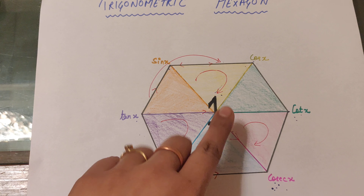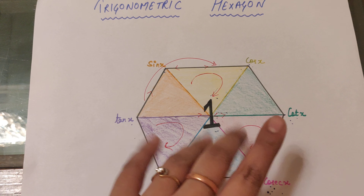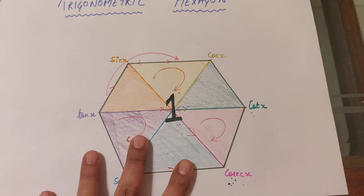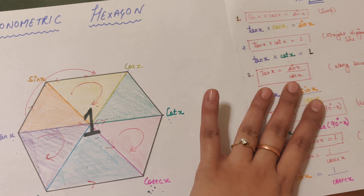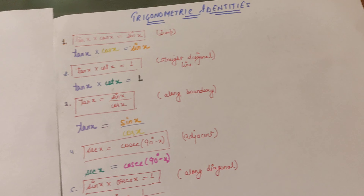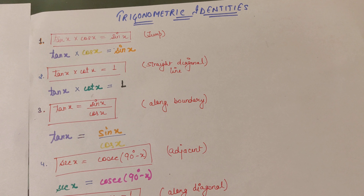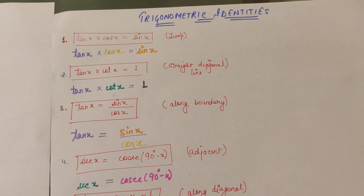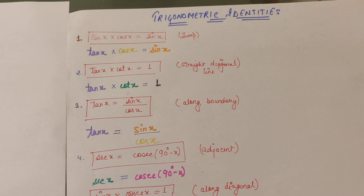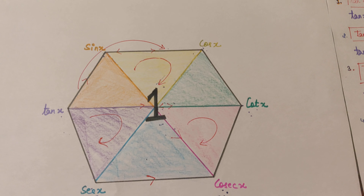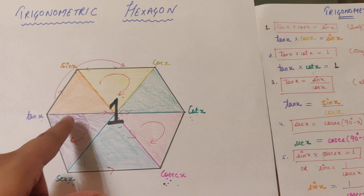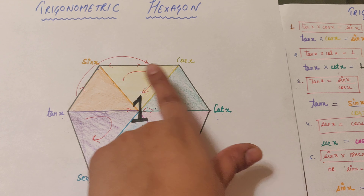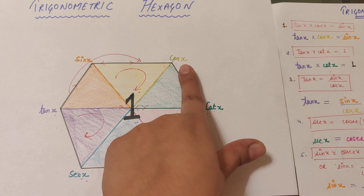Hello friends, I'm here with a new video as I promised in the last one. This is for the regular hexagon — the super magical hexagon. In this video we'll see how we can calculate all the identities using this single hexagon without remembering the identities.